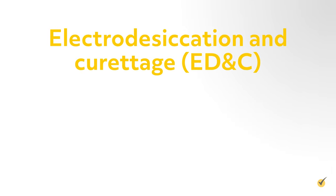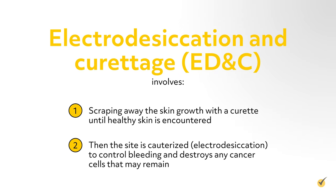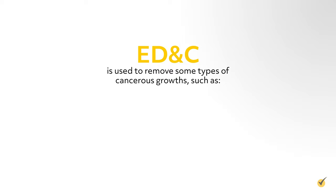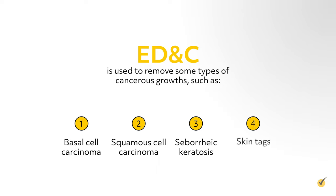Electrodesiccation and curettage involves scraping away the skin growth with a curette until healthy skin is encountered, and then the site is cauterized to control bleeding and destroy any remaining cancer cells. ED&C is used to remove some types of cancerous growths such as basal cell carcinoma and squamous cell carcinoma, seborrheic keratosis, and skin tags.